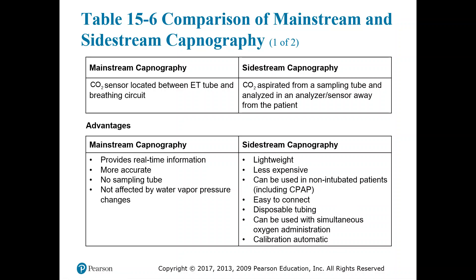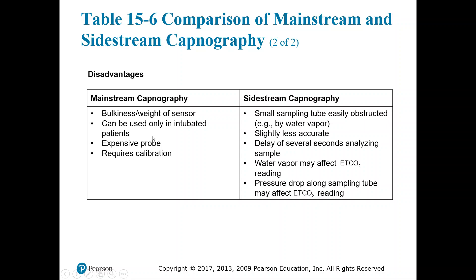Disadvantages of mainstream capnography include that it is bulky and the sensor is pretty heavy. They're generally found in hospitals and can be used in intubated patients only — that sensor only fits on the adapter between the ET tube and the vent circuit. The probe is expensive because the sensor is right there in that probe, and it is disposable since you can't use it on multiple patients. You have to replace that sensor every single time, and they also require calibration.